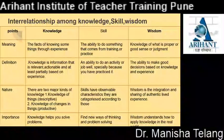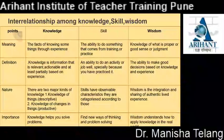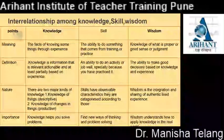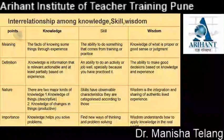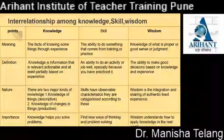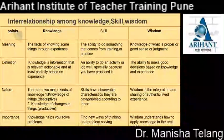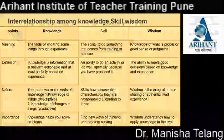Interrelationship among knowledge, skill and wisdom — again covering meaning, definition, nature and importance. Meaning of knowledge: the facts of knowing something through experience. Meaning of skill: the ability to do something that comes from training or practice. Meaning of wisdom: knowledge of what is proper or good — sound judgment.